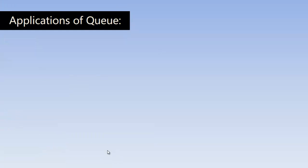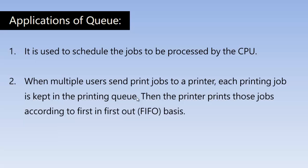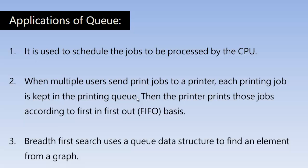Now let us understand the applications of queue — where we actually use the queue data structure. It is used to schedule jobs to be processed by the CPU: if the CPU is handling multiple jobs, they are scheduled using a queue and processed on a first-in, first-out basis. When multiple users send print jobs to a printer, each job is kept in a printing queue and printed in FIFO order. Queue is also used in the breadth-first search algorithm.